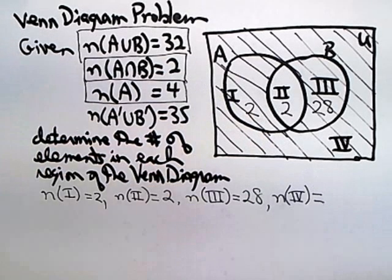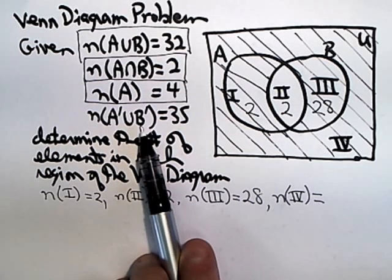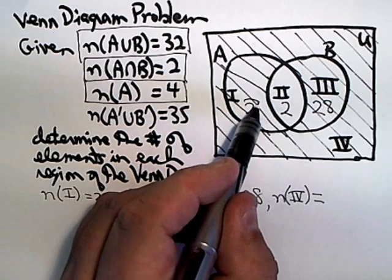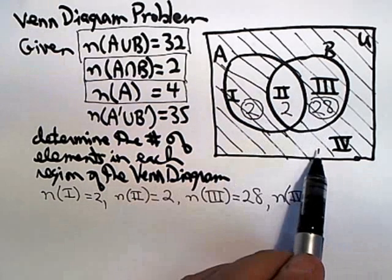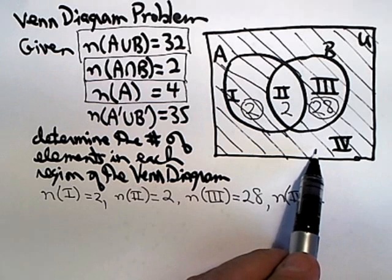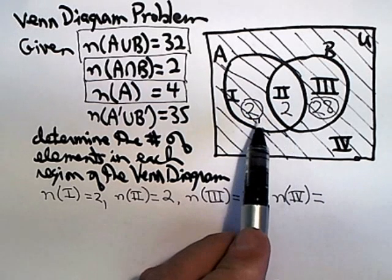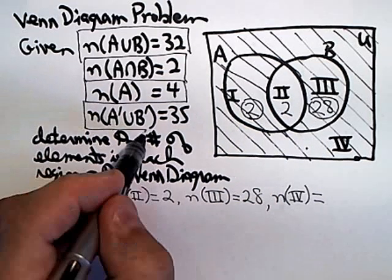And so that shaded region, everything that I've crosshatched, is the union of A complement and B complement. And those shaded numbers have to add up to 35. Well, that's one of the shaded numbers. That's one of the shaded numbers. And whatever's out here is the other shaded number. Just 2 in the center is not shaded, so it doesn't count. So this number plus this number plus whatever goes out here has to add up to 35.